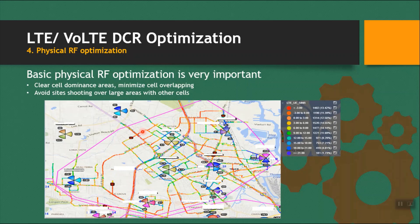You have to make decisions based on drive reports, call events, and whatever data you have. Also, if you don't have a drive report, you can use the TA samples report. Based on the TA sample report, you can check how far your cell is serving.